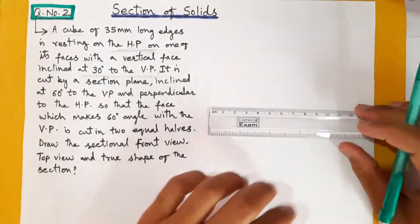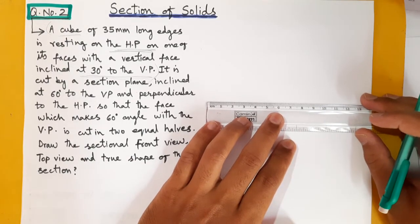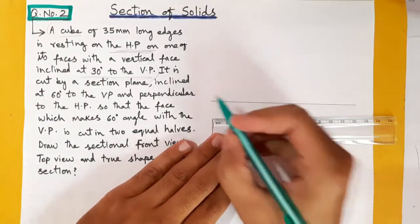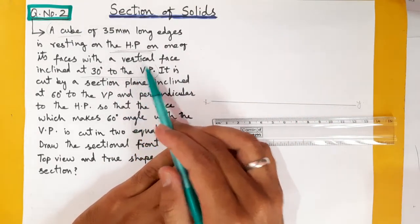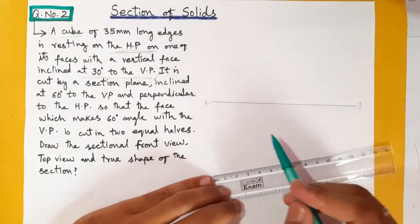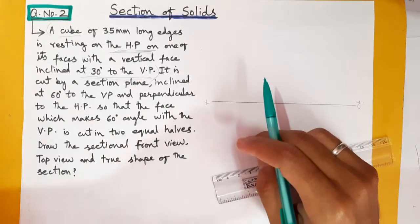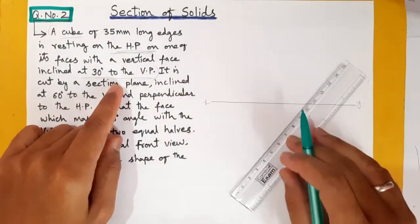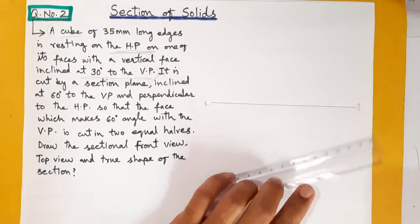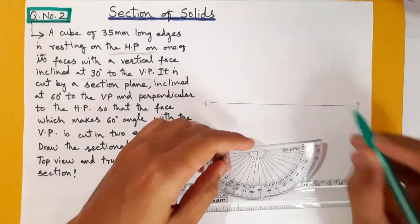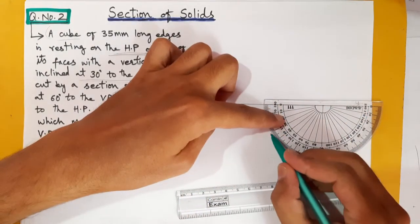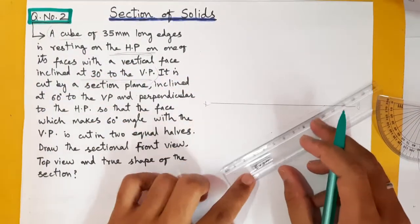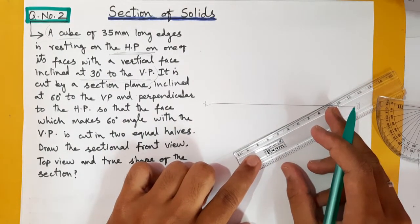Let us start the problem. I will draw the XY line. One of the base edges or vertical faces is 30 degrees to the VP. In the top view, imagine you are looking from the top — the cube is placed and with respect to the vertical plane it is inclined 30 degrees. We will draw the cube in top view of side 35 mm at 30 degrees, marking the 30 degree inclination.